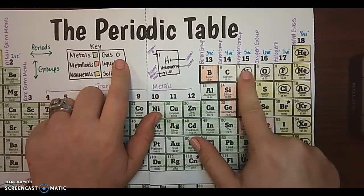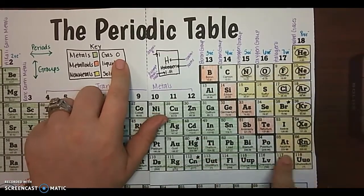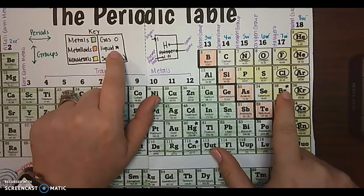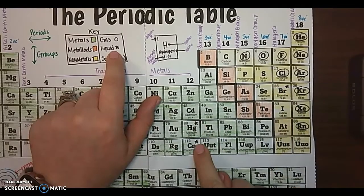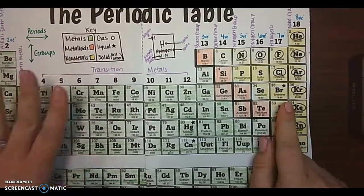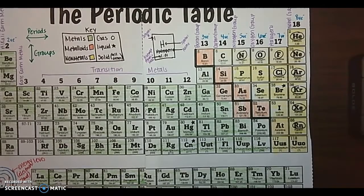On the gases, I circled the symbol if it's a gas. If it's a liquid, I put a star. So there's not very many. We've got 35, 80 and 112. Those are going to be our liquids. And then all of the other ones are solid. So I didn't put a mark next to them.